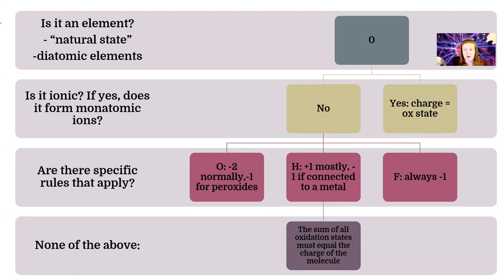The last rule is everything adds up to the charge on the molecule. I think of this as a flow chart in my head. So the first question: is it an element in the natural state? Don't forget your diatomic elements. If so, the oxidation state is zero. If it's ionic and it has monatomic ions, meaning one single atom ions, the charge is the same as the oxidation state.